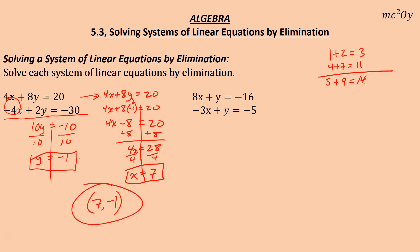Remember, a solution to a system — if you substitute 7 and negative 1 for x and y in your original equations: 4 times 7 is 28, plus 8 times negative 1 is negative 8. 28 and negative 8 is 20. Then negative 4 times 7 is negative 28, plus 2 times negative 1 is negative 2. Negative 28 and negative 2 is negative 30. It works.